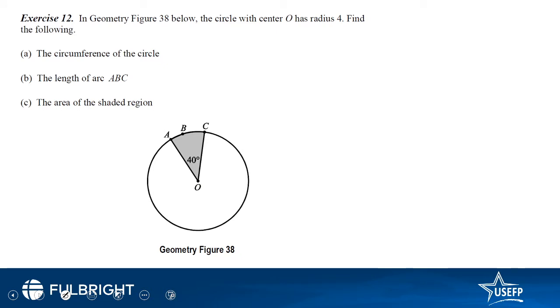Now the geometry figure below, the circle with center O has a radius 4. Find the following: the circumference of the circle. The formula for the circumference is 2 pi r, so you just substitute the value.